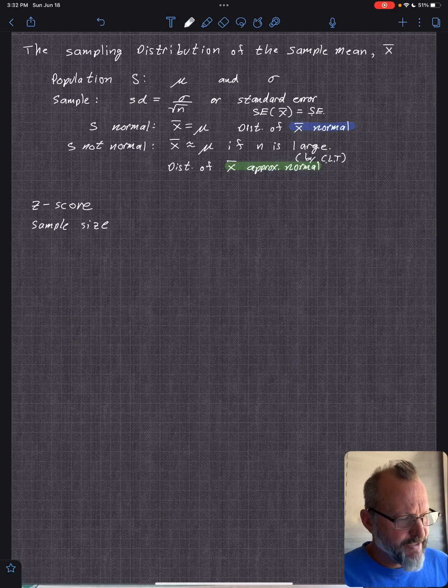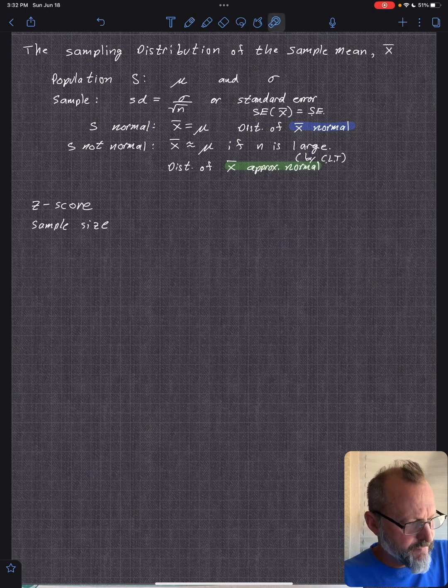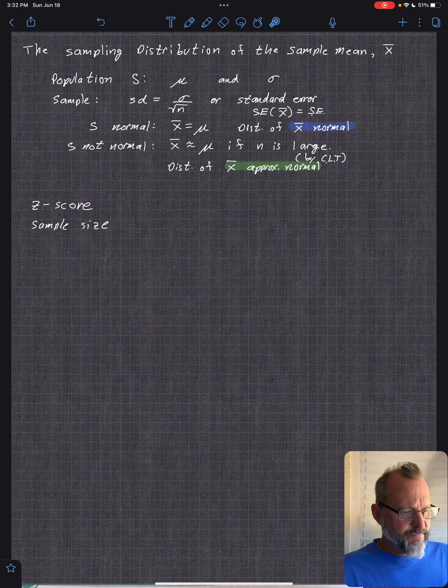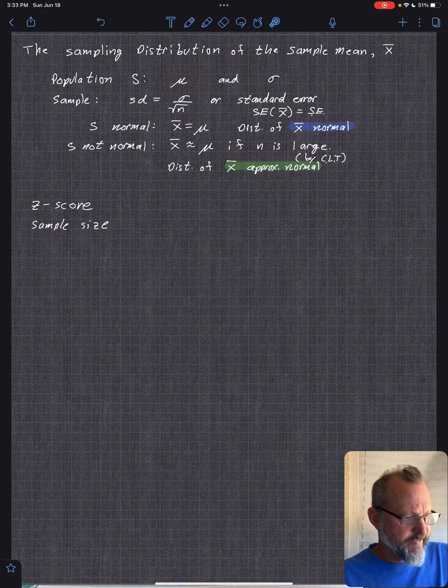Continuing in the sampling distribution for the sample mean. Now we have this setup. Suppose we have a population S with a mean of the population mu and standard deviation sigma. That's known.